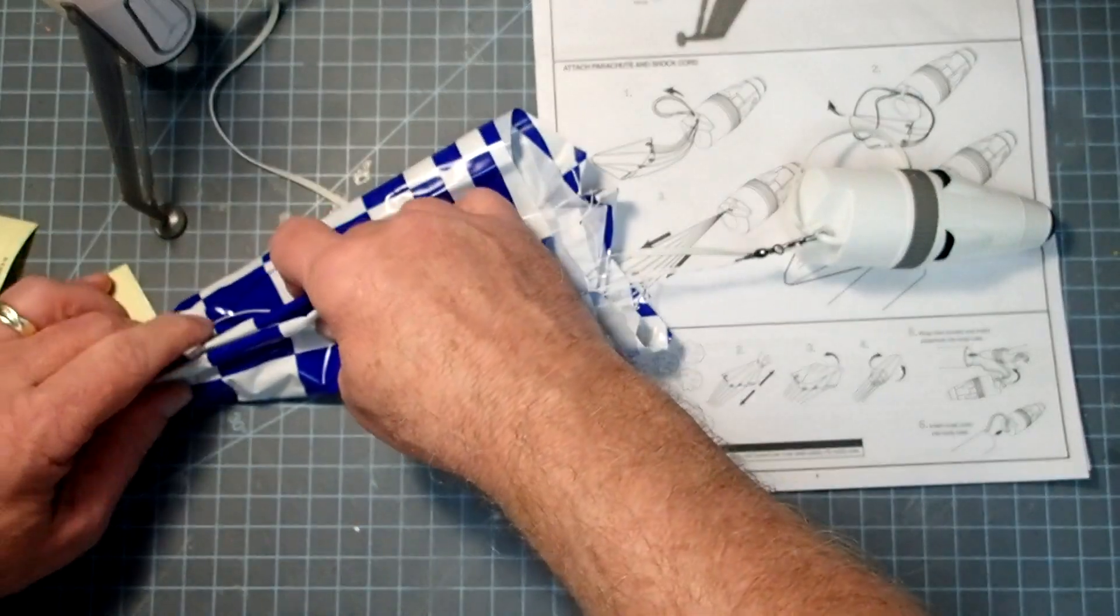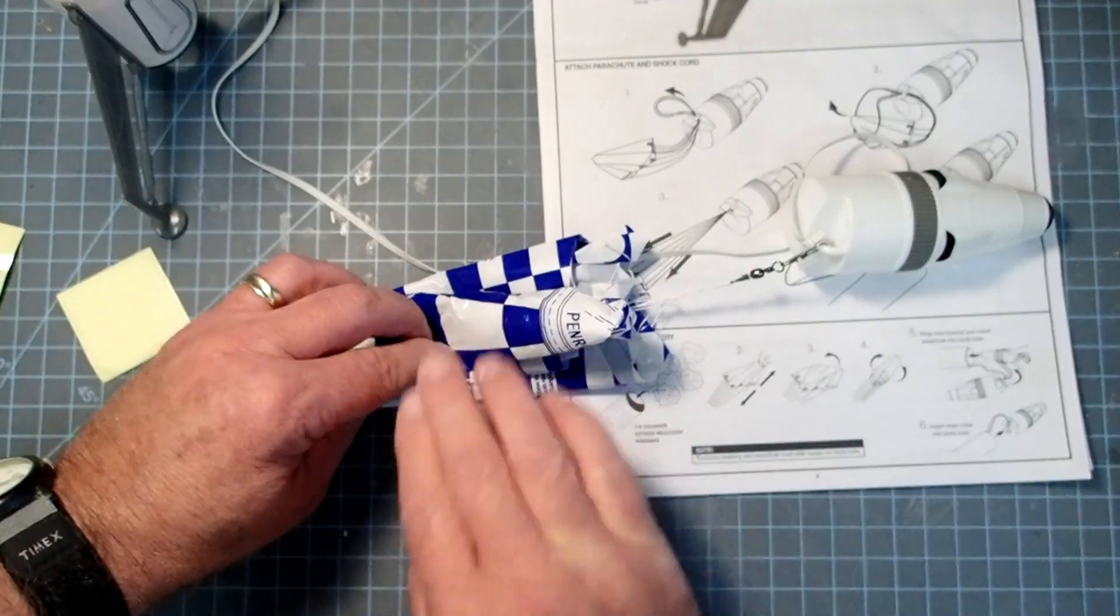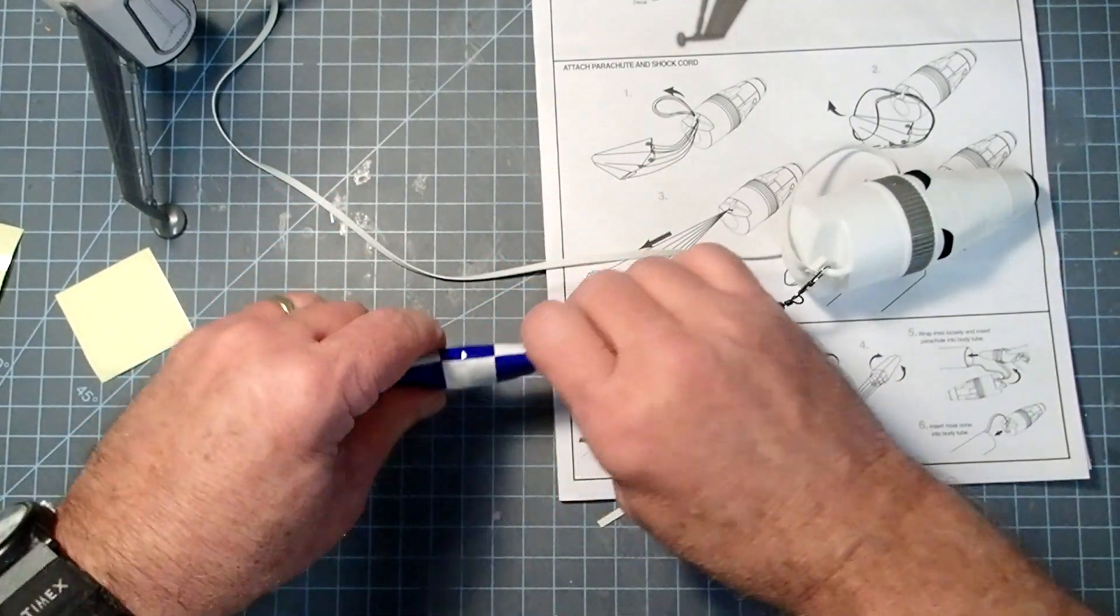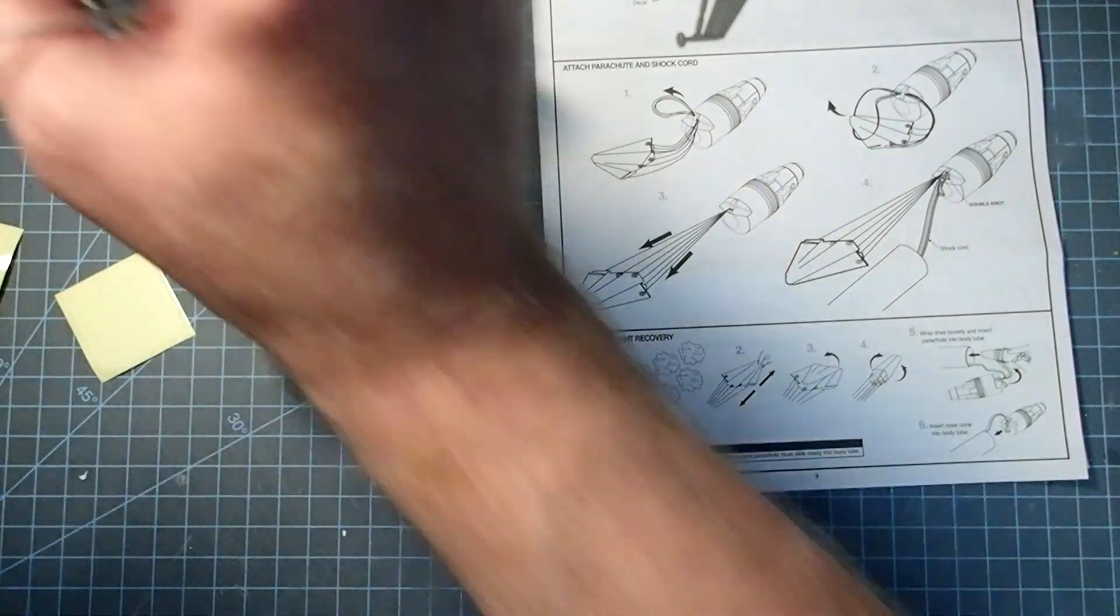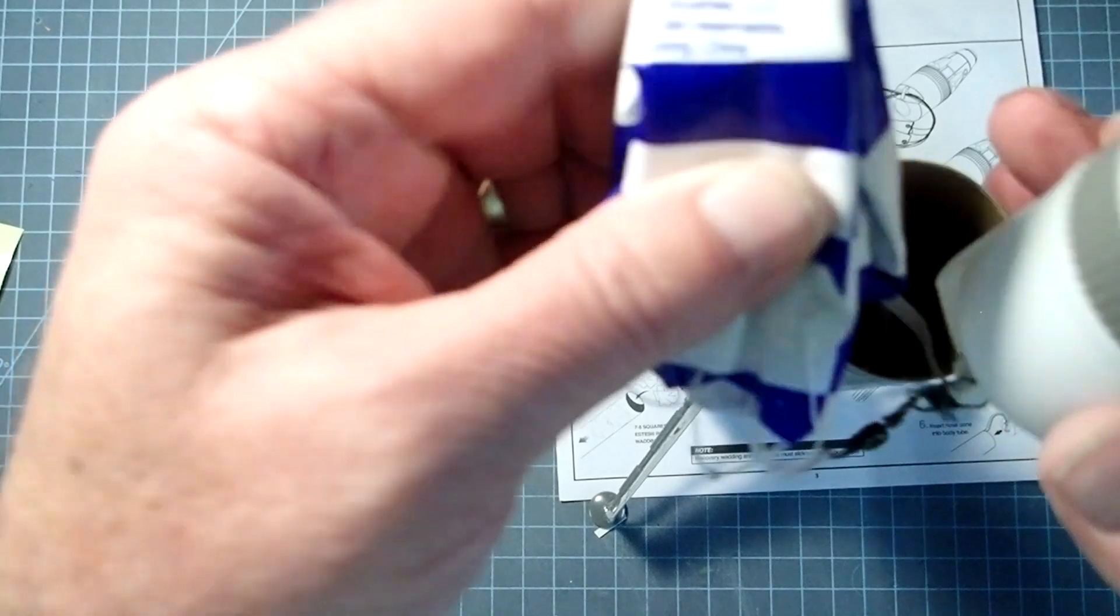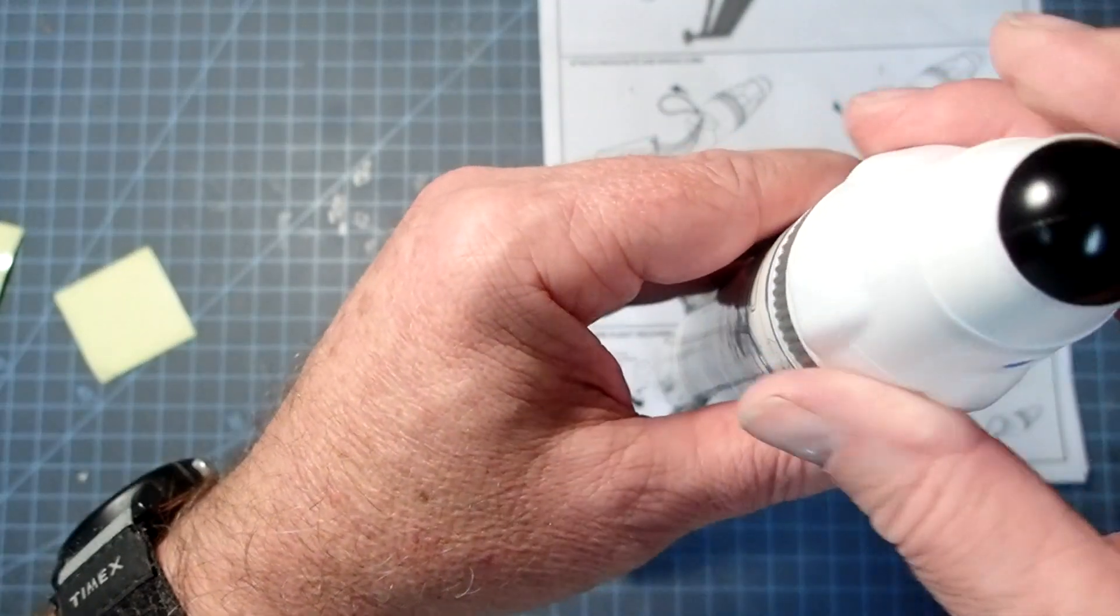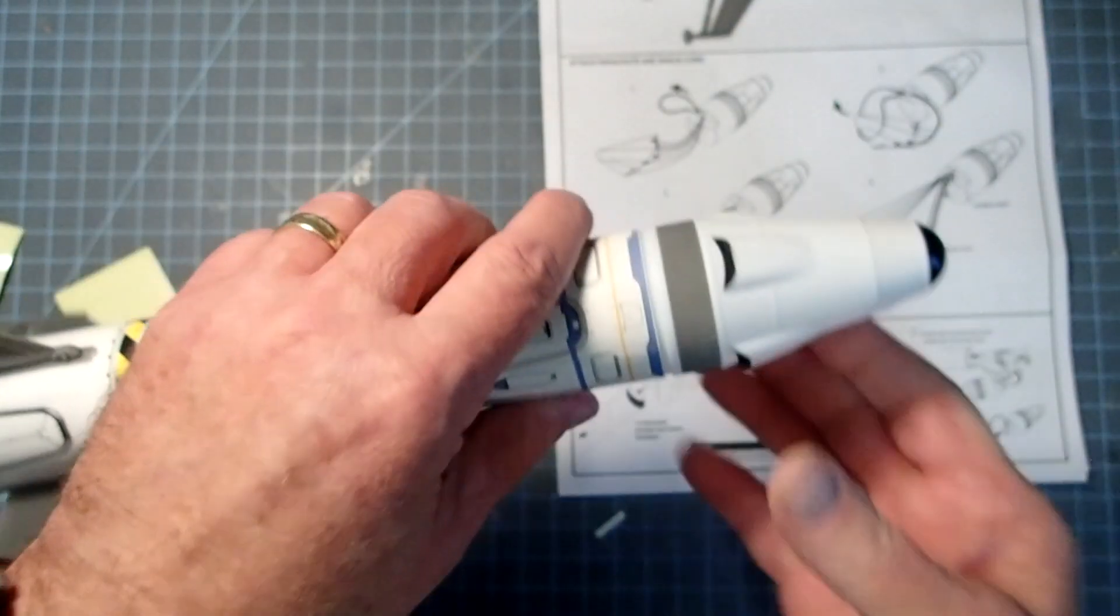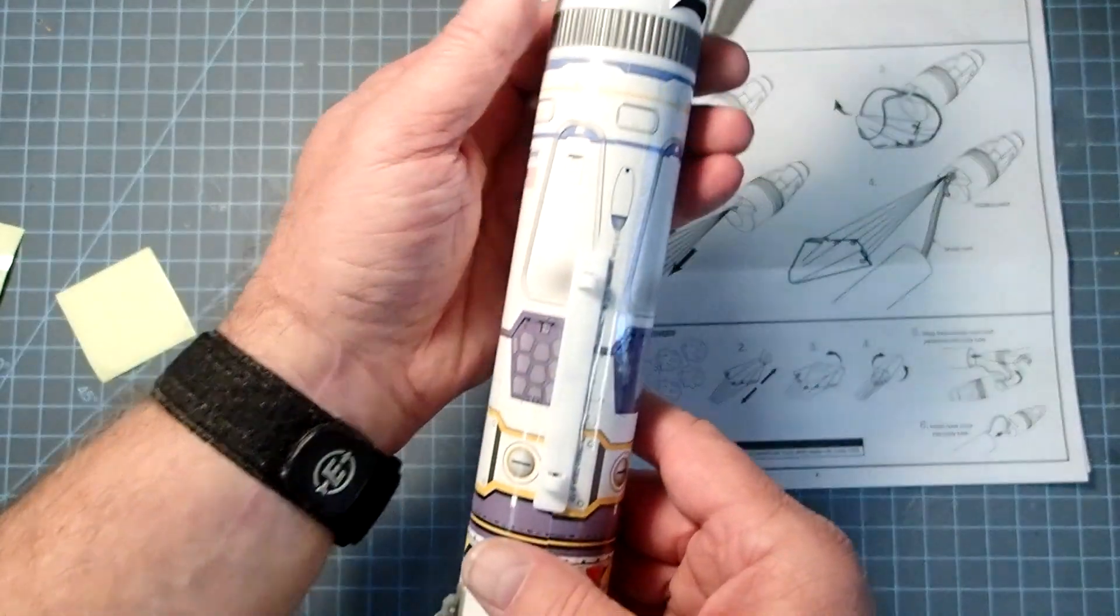I'm going to fold that down over itself, and then just kind of roll that together. If you want, you can do one more fold here. And then we'll just take and slide the shock cord down in there, followed by the parachute, and then the nose cone. Now that nose cone should be snug enough that if you turn it upside down and shake it, it doesn't fall out, but not so snug that you can't remove it fairly easily. So this is pretty good right now, but you always want to check that before launching on launch day.